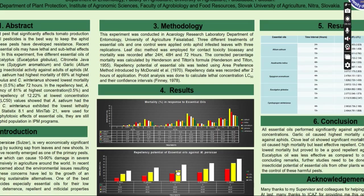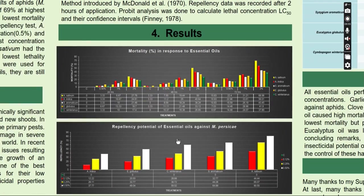Now coming to the repellency potential of essential oils against Myzus persicae: repellency increased with concentration, similar to the mortality results. The lowest repellency was achieved at 0.125% of neem oil at 12.22%, while the highest repellency was achieved at the highest concentration of 0.5% from Allium sativum garlic oil at 80.55%.